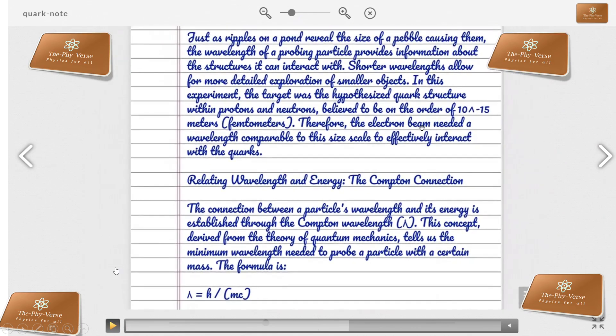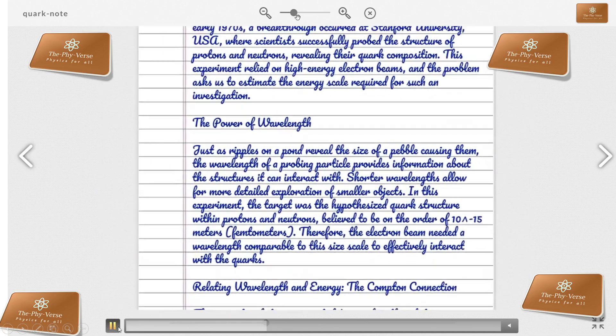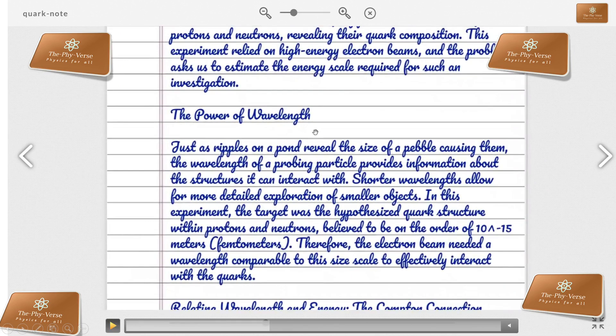Relating wavelength and energy - the quantum connection. Just as ripples on a pond reveal the size of a pebble causing them, the wavelength of a probing particle provides information about the structures it can interact with. Shorter wavelengths allow for more detailed exploration of smaller objects. In this experiment, the target was the hypothesized quark structure within protons and neutrons, believed to be on the order of 10 to the power minus 15 meters, that is femtometers. Therefore, the electron beam needed a wavelength comparable to this size scale to effectively interact with quarks.